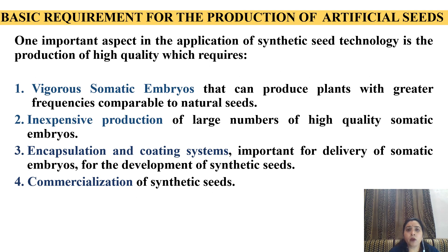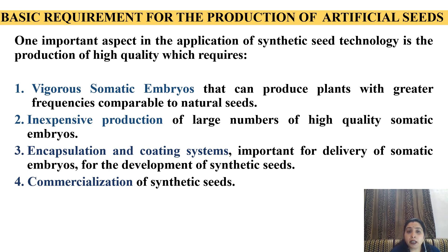Basic requirements for the production of artificial seeds: First we will require vigorous somatic embryos that can produce plants with greater frequencies in comparison to natural seeds — that means they should be more vigorous than natural seeds with more potential. Inexpensive production of a large number of high quality somatic embryos is needed, meaning the production costs should be less. An encapsulation and coating system is important for delivery of somatic embryos for the development of synthetic seeds. Then commercialization of these synthetic seeds is required.